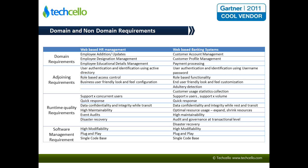These features are applicable for both HR management as well as a banking system. In HR management, it could be who sees what information — for example, who can look at an employee's salary data and how you control that access. On the banking side, you want granular levels of control to determine what a clerk can do, what an executive can do, what a manager can do, and what kind of transactions they can operate on. So the adjoining requirements are the surrounding requirements that help you govern.